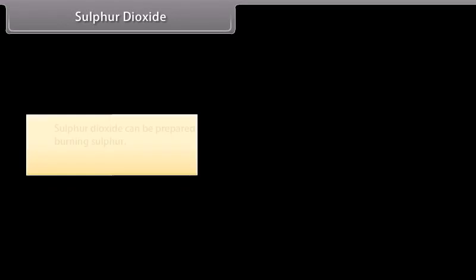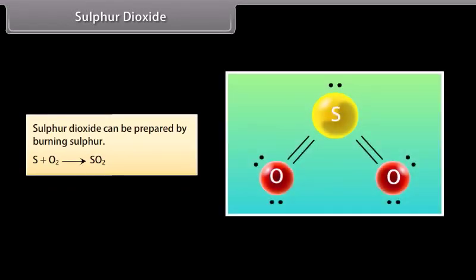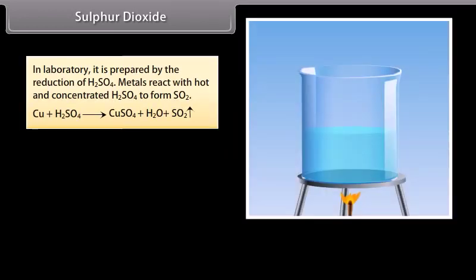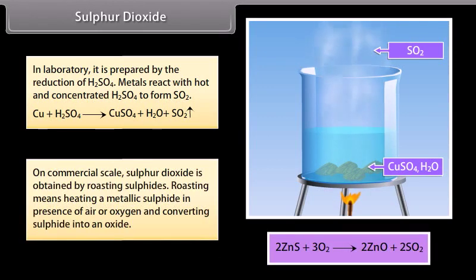Sulfur dioxide. Sulfur dioxide can be prepared by burning sulphur. In laboratory, it is prepared by the reduction of H2SO4. Metals react with hot and concentrated H2SO4 to form SO2. On commercial scale, sulphur dioxide is obtained by roasting sulphides. Roasting means heating a metallic sulphide in presence of air or oxygen and converting sulphide into an oxide.